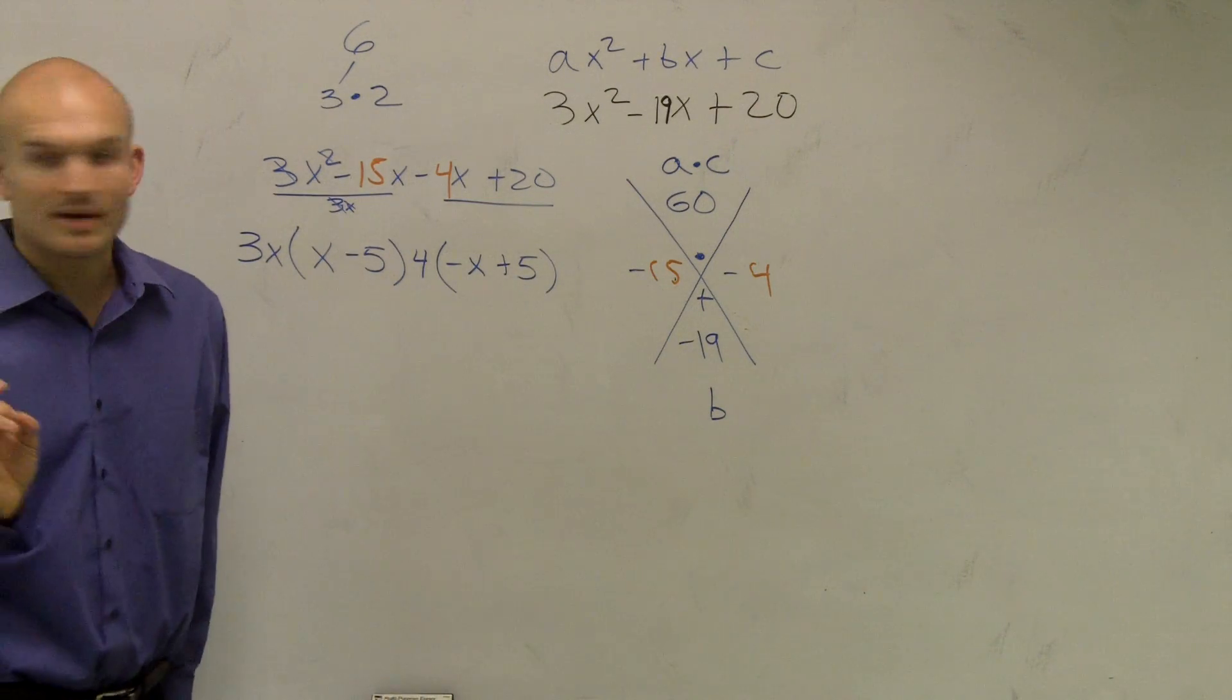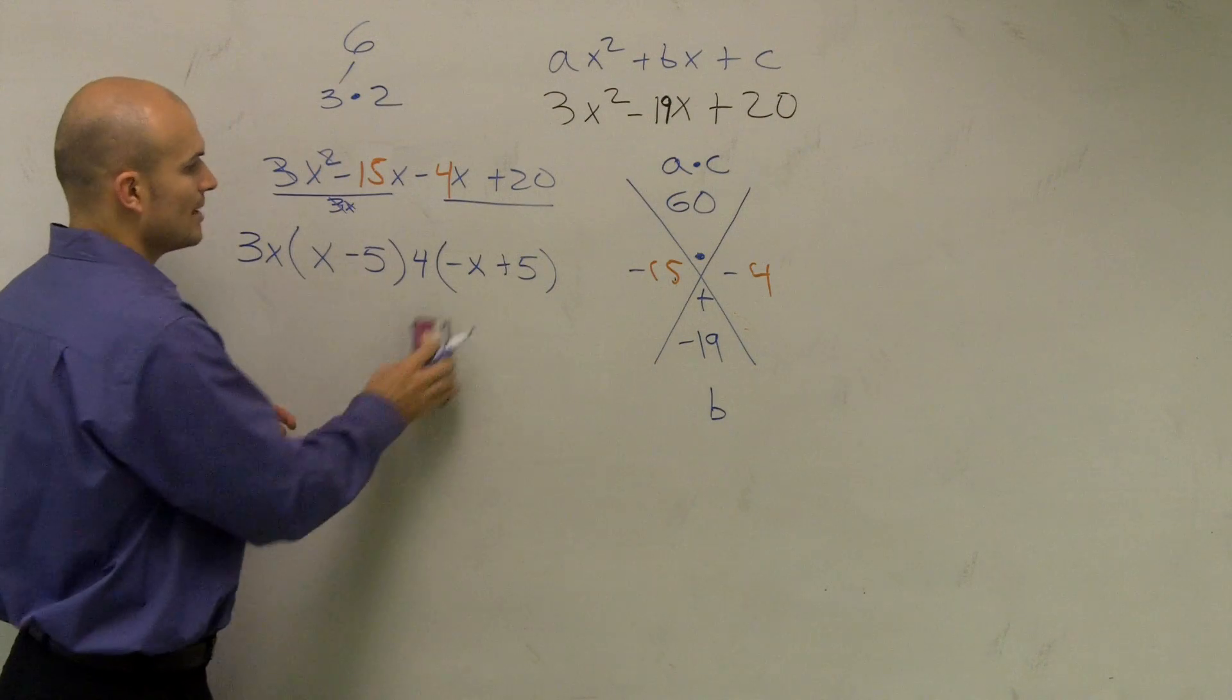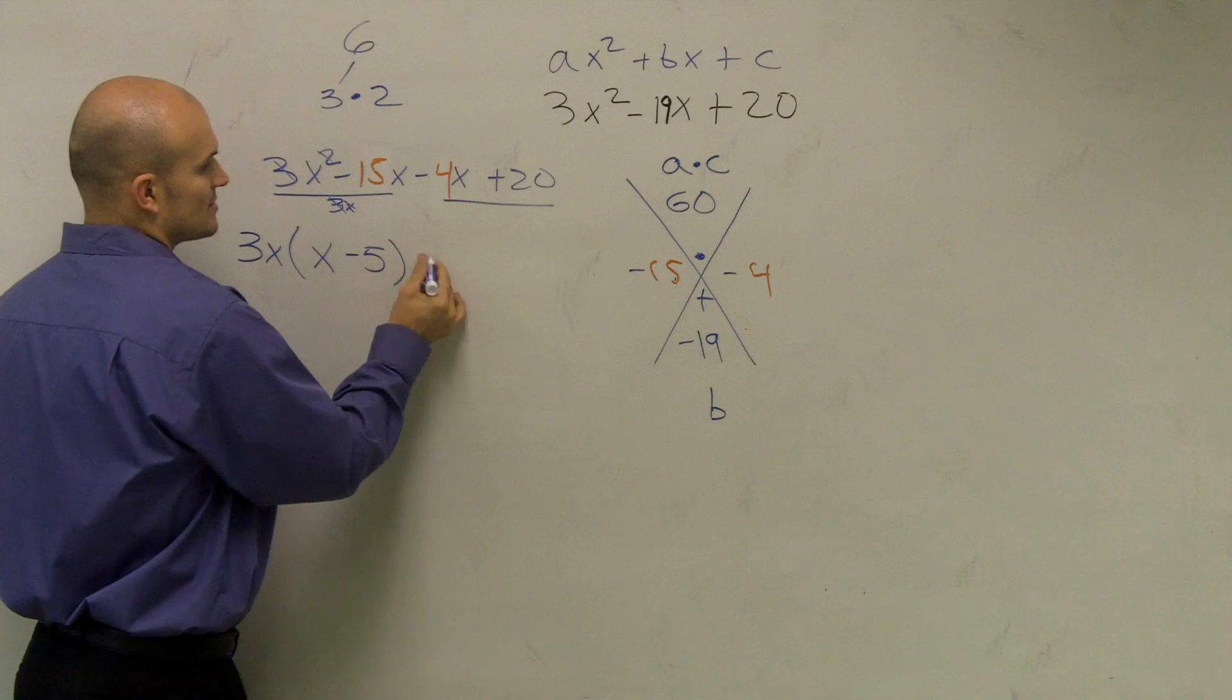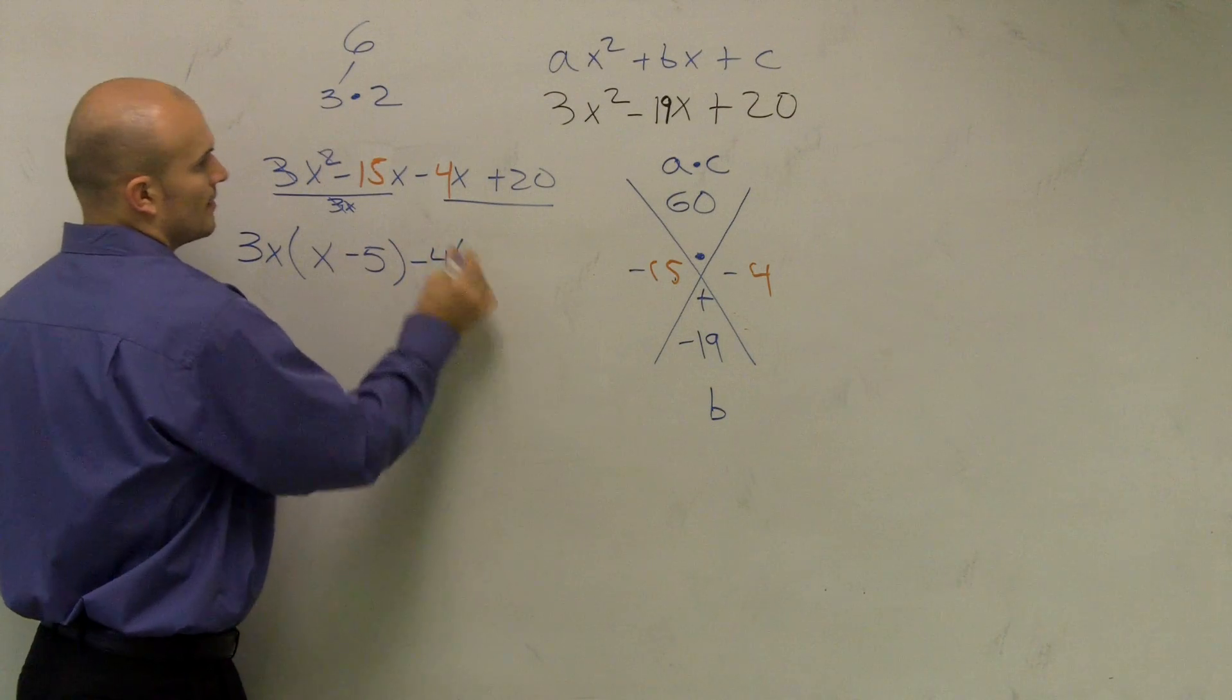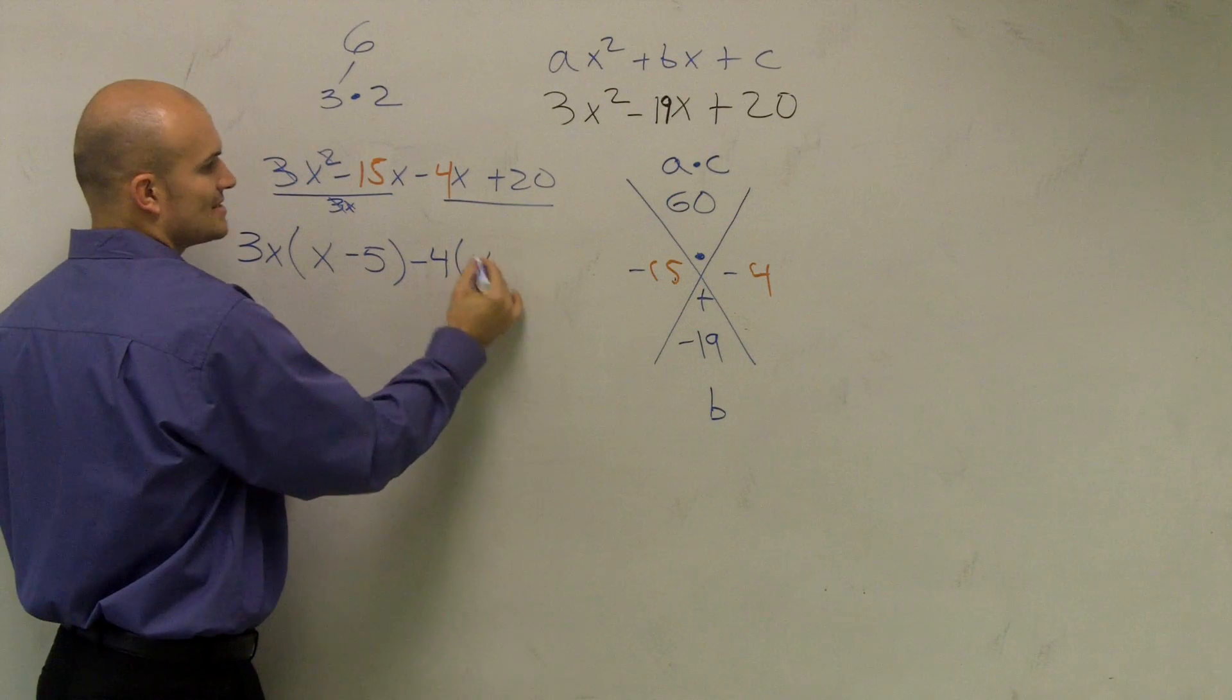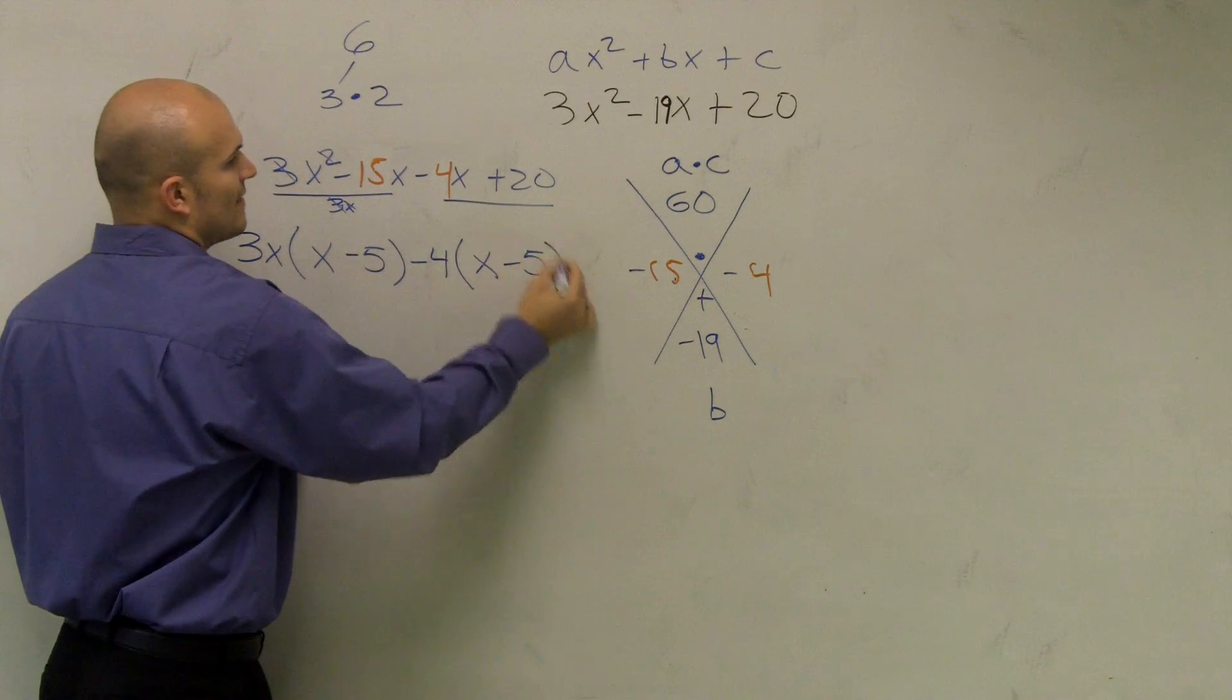A quick little tip, but when I explain it, you need these to be exactly the same to finish up our problem. So rather than factor out a positive 4, let's factor out a negative 4. Negative 4x divided by negative 4 gives you now a positive x. 20 divided by negative 4 gives me a negative 5.